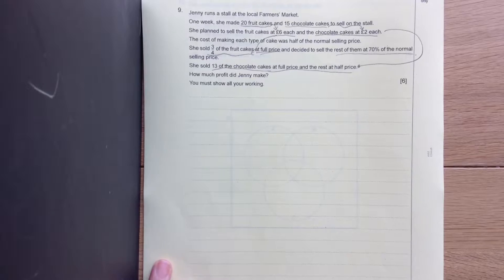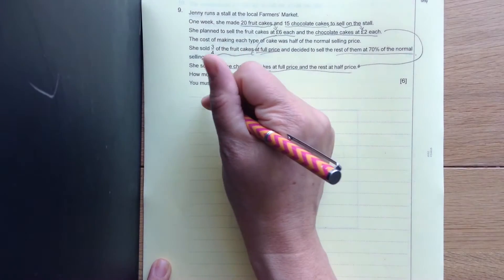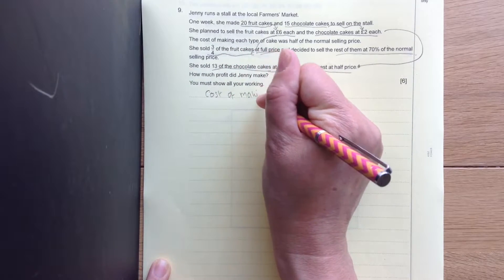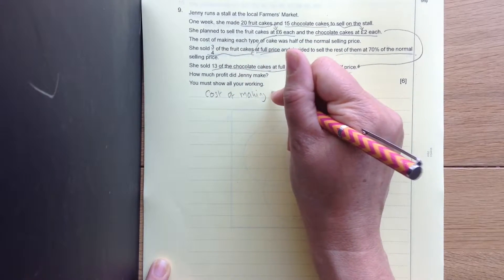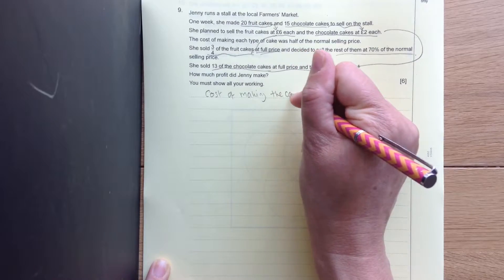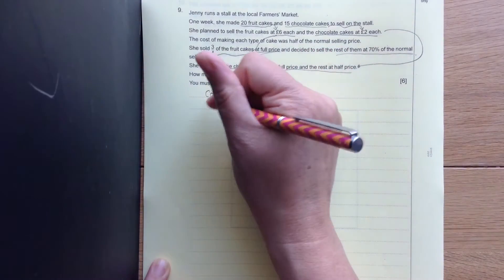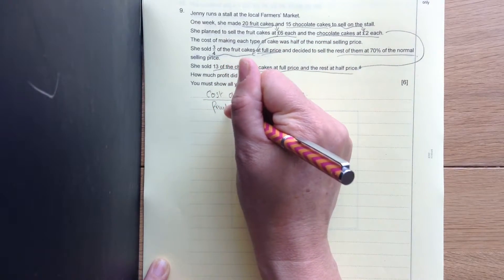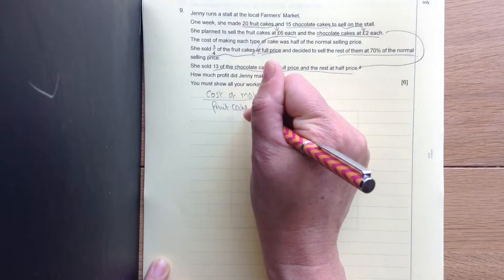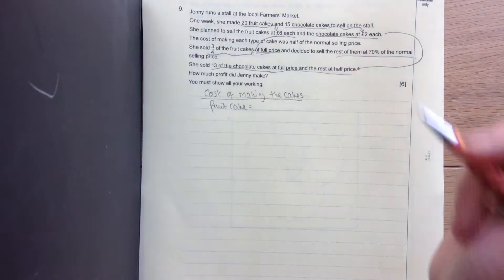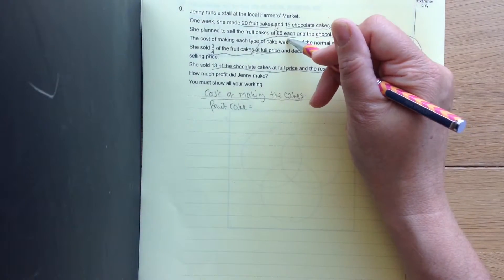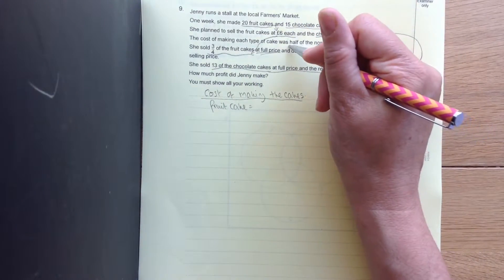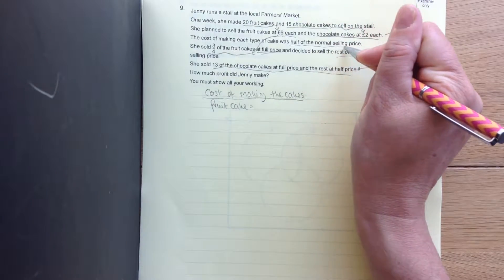So the first thing we're going to do is look at the cost of making the cakes. So that's our first part. The fruit cake first of all then. It said that the fruit cakes are going to cost £6, and there's 20 of them. But the cost of making the cakes is half the normal selling price.